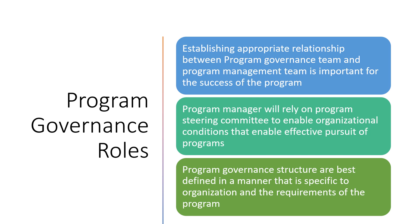Program managers depend on program governance leaders and enablers to help enable organizational conditions — such as putting resources in place, getting the right competencies, funding, and budgeting. You need a good relationship, and the program governance structure should be defined in a manner that is specific to the organization.